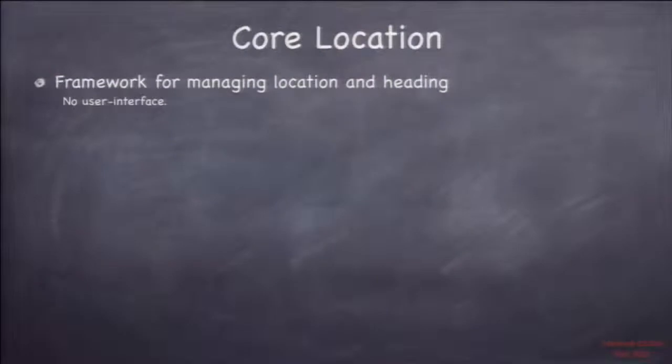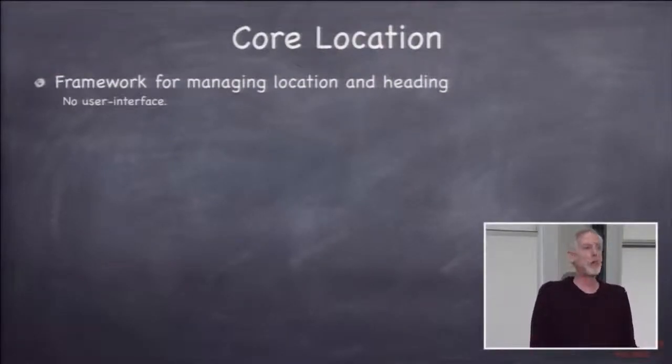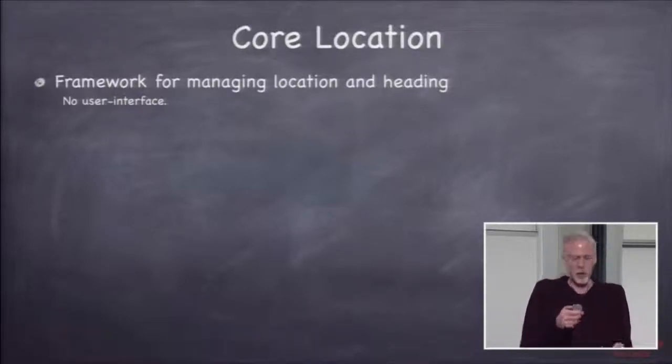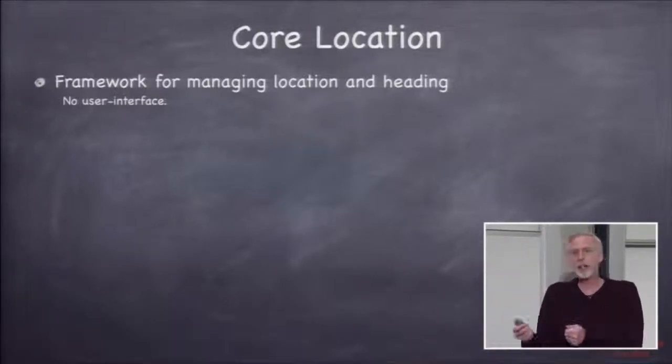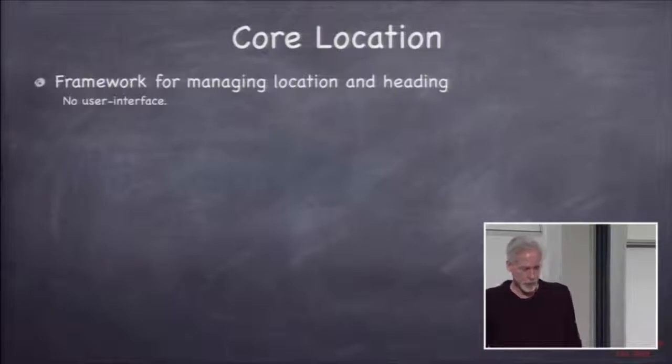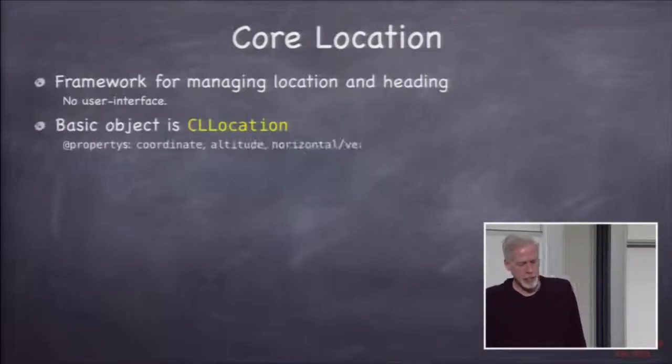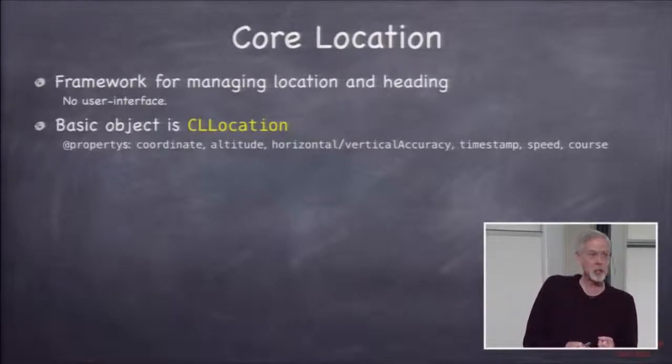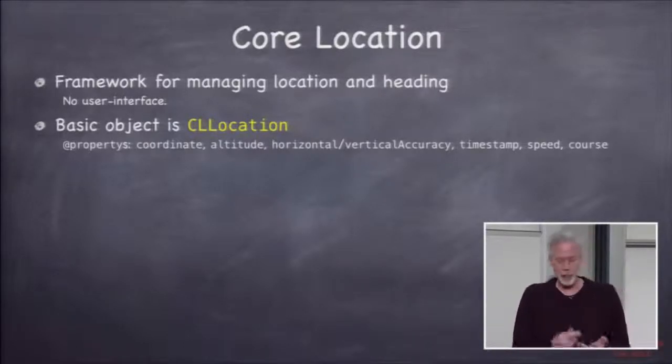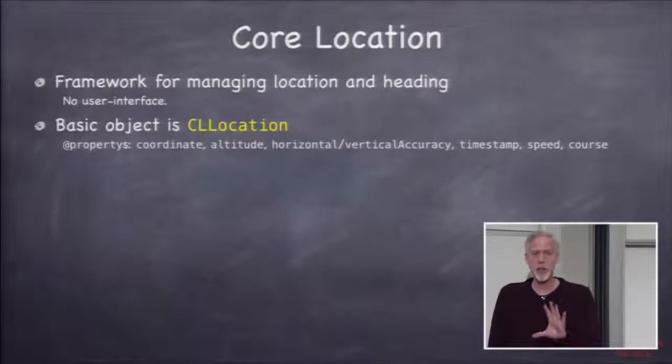So core location is a framework, has a bunch of objects in it that have to do with where is this device in the universe. Where on the planet, in terms of GPS or other factors determining where it is. So its basic object is a CLLocation that includes a coordinate, which is latitude and longitude, altitude, horizontal and vertical accuracy, we'll talk about why that's important, time stamp, speed, course, things like that. That's the CLLocation object.